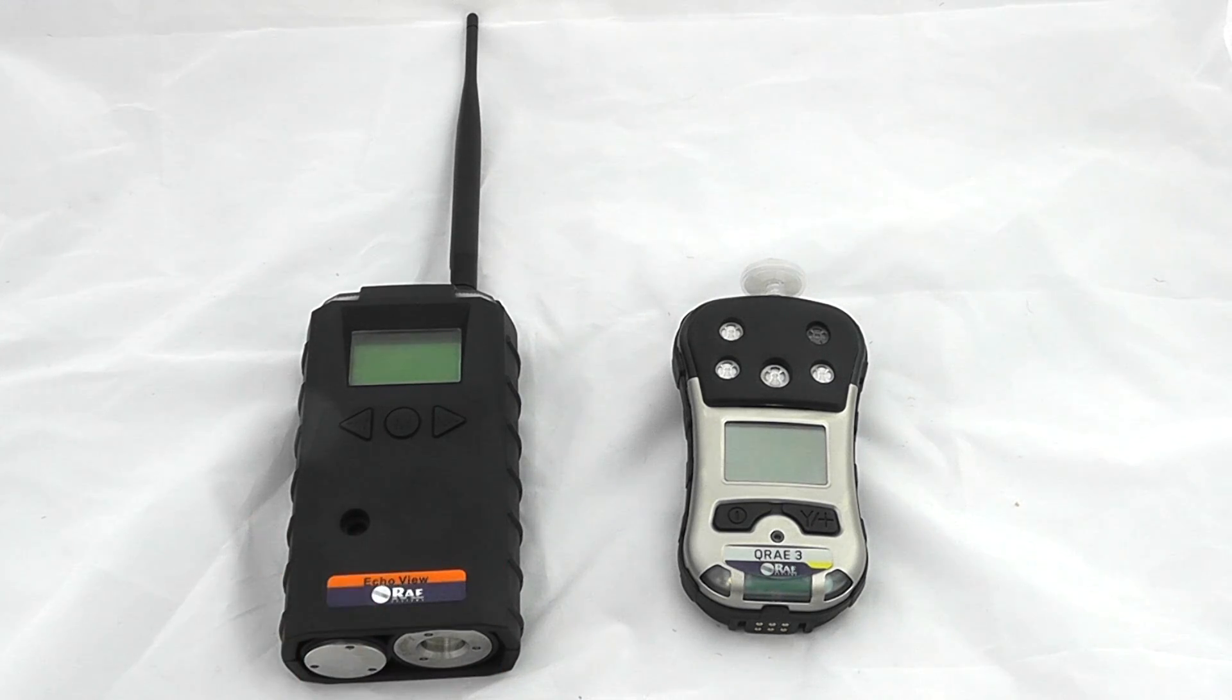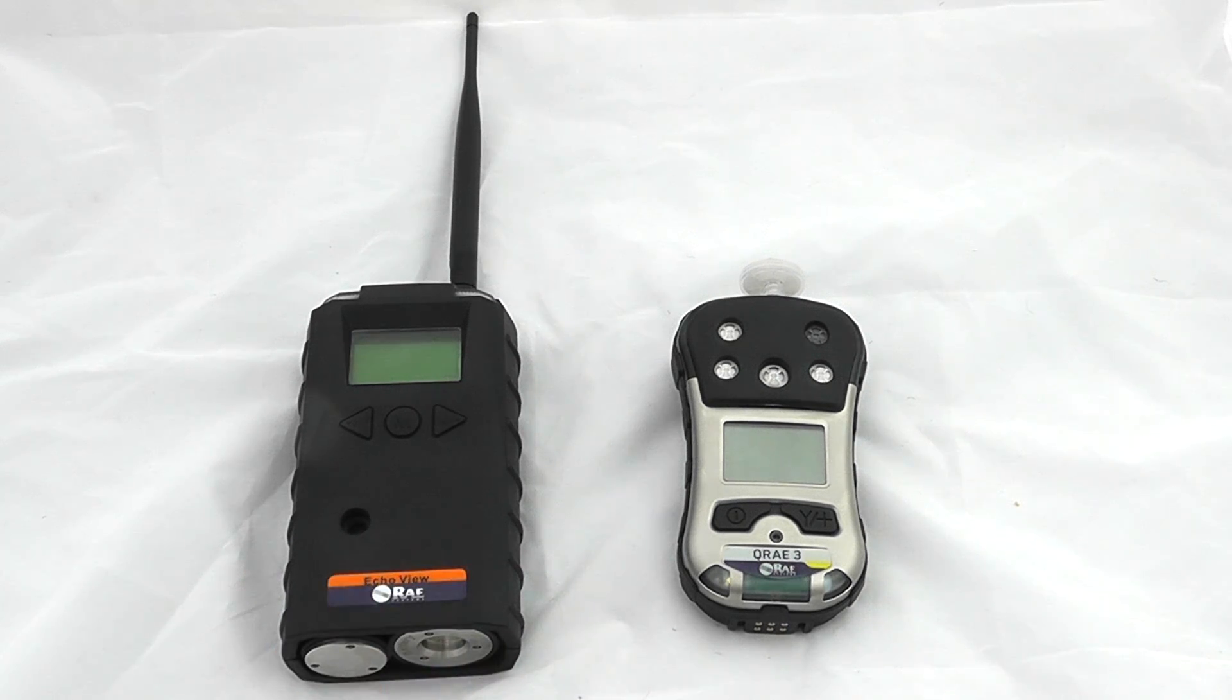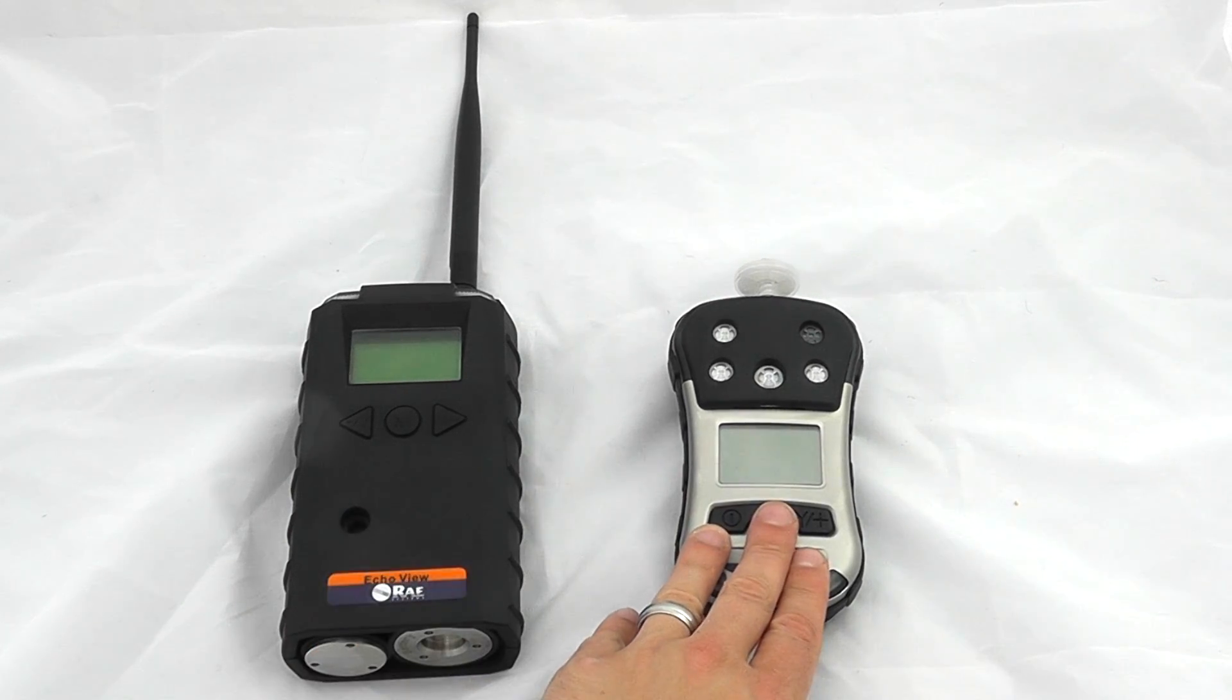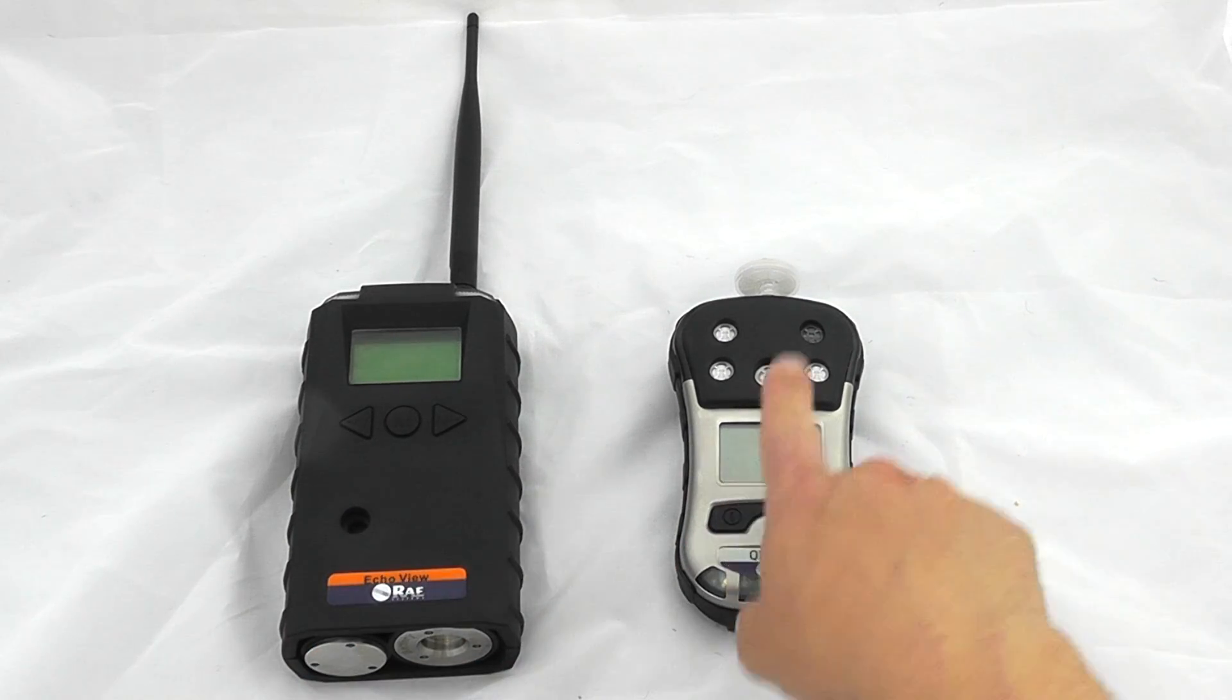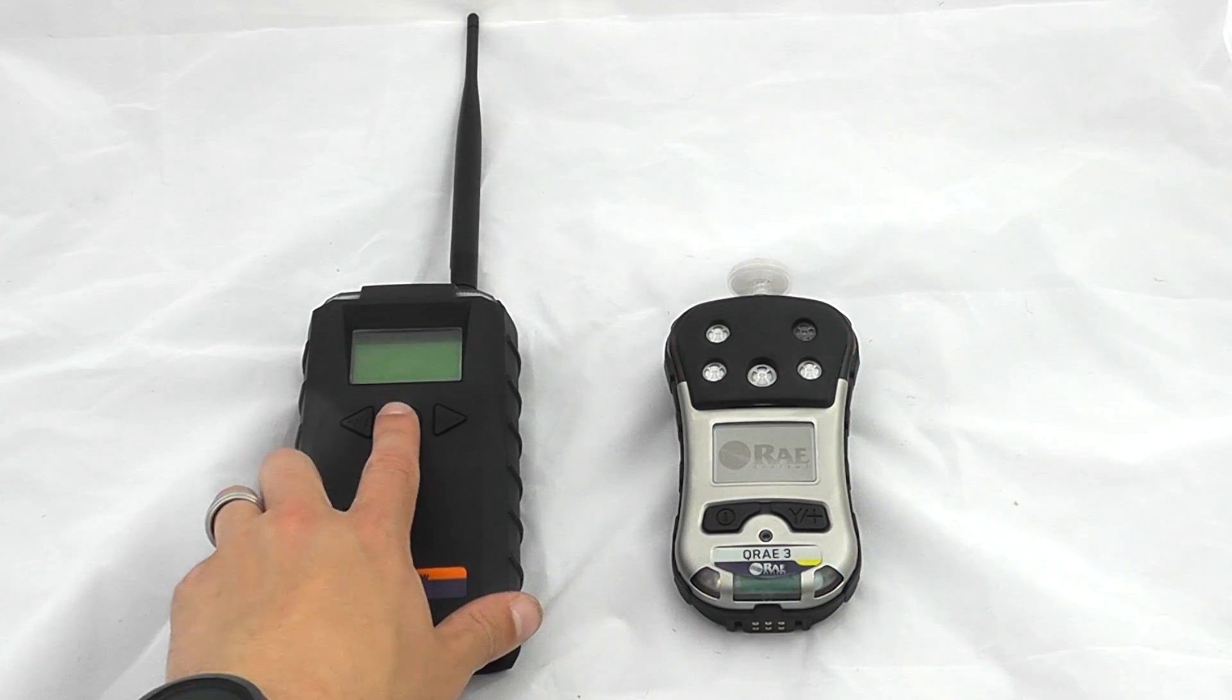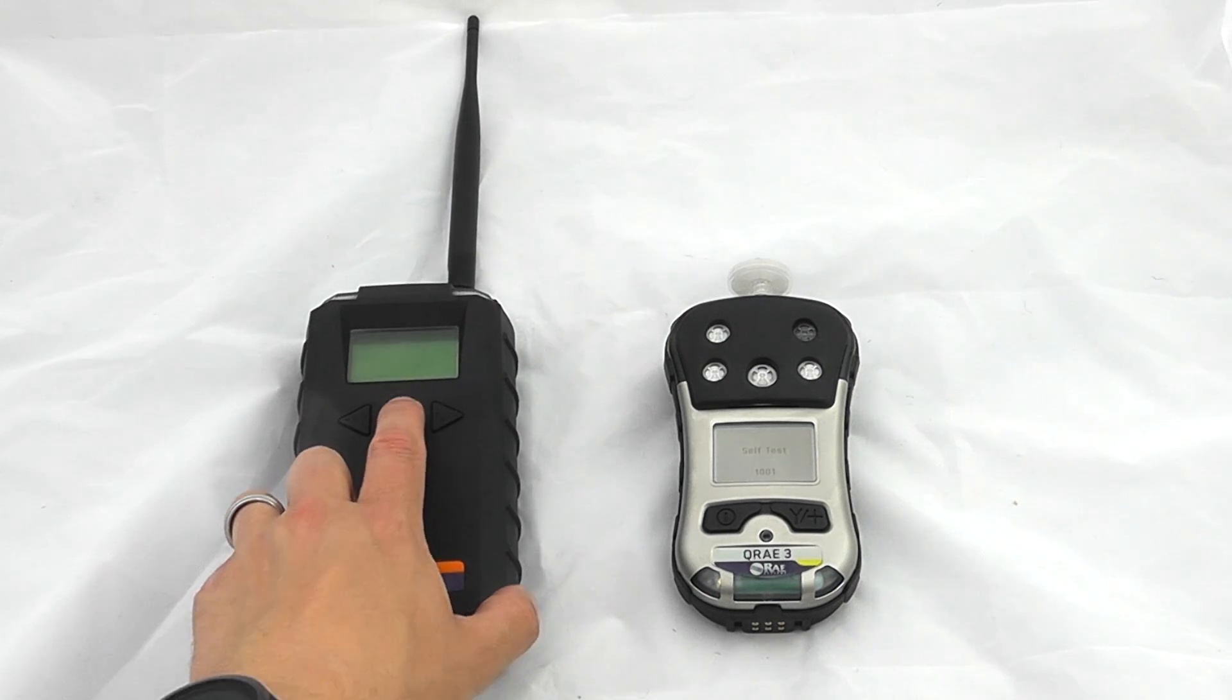We have a Q-Ray 3 instrument set up to communicate with the Echo View. The Echo View can display up to eight separate instruments, including Q-Ray 3s, Toxiray Pros, Multi-rays, and other options. This is ideal for site supervisors to remotely monitor people wearing these instruments in the field. For standard operation, switch the units on using the mode buttons.